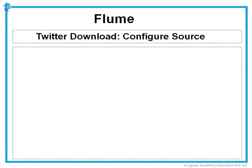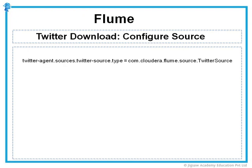First, the source. Like we did previously, we first need to define the type of the source. Here our source type is not out of the box — say something like an exec command or a syslog file. We have to define that using the line below. Here we define our source type to be a Java class called Twitter source, inside the Java package com.cloudera.flume.source. Remember we downloaded a jar file and placed it in the lib folder — the Twitter source class is in that jar file and is being referred to here.